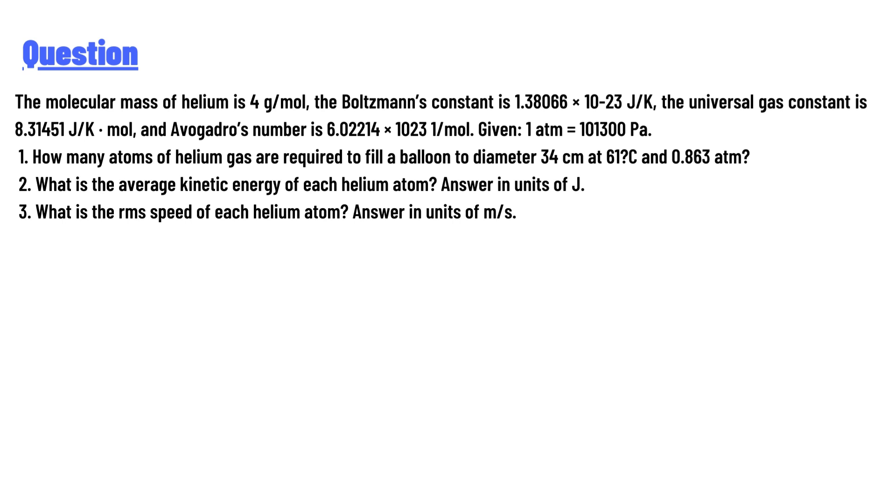The Boltzmann's constant is 1.38066 × 10^-23 J/K, the universal gas constant is 8.3145 J/K·mol, and Avogadro's number is 6.02214 × 10^23. Given 1 atm equals 101300 Pa.